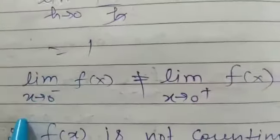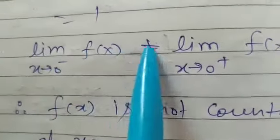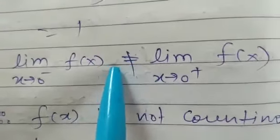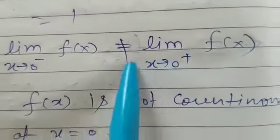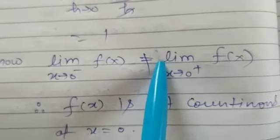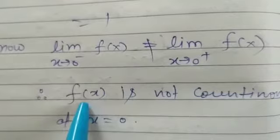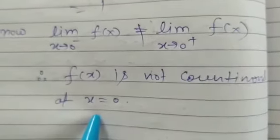So we observe that limit x tends to 0 negative f(x) is not equal to limit x tends to 0 plus f(x). So this condition does not follow the condition of continuity. So we are in position to say that this function is not continuous at x equal to 0.